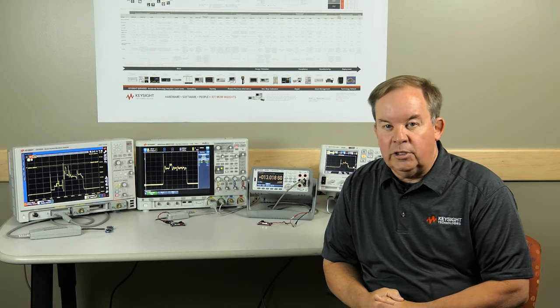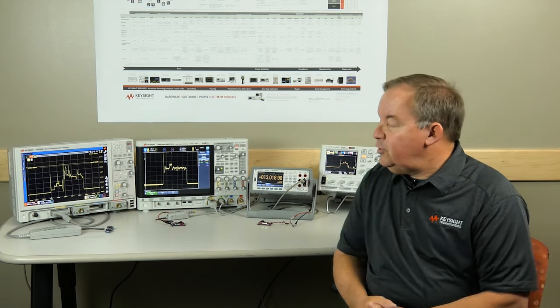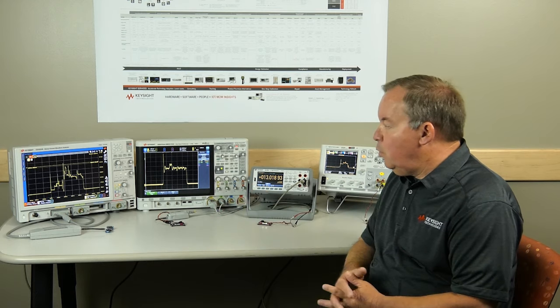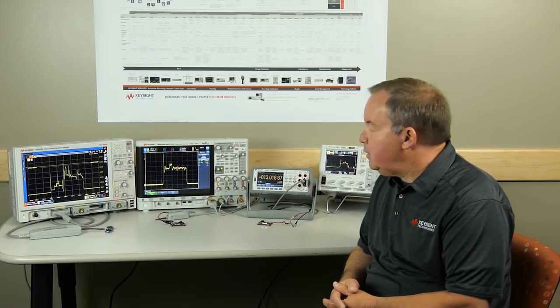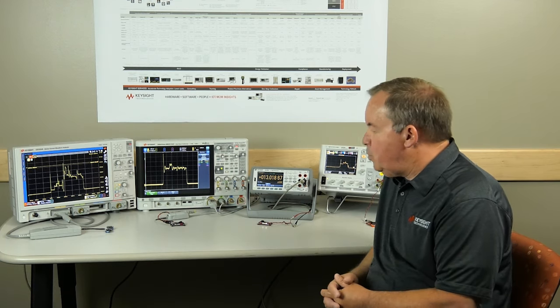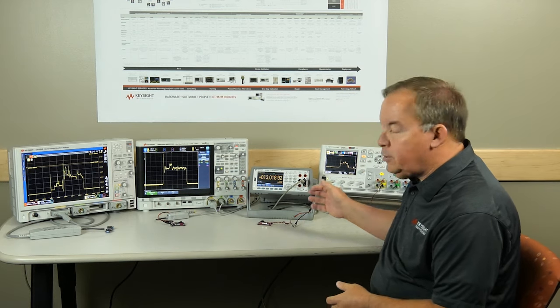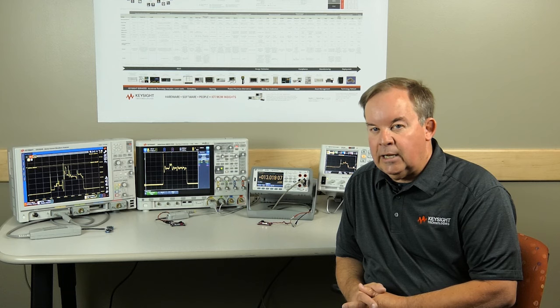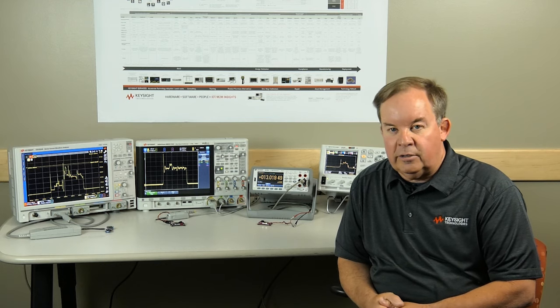Keysight offers a number of solutions available to attack this problem in different ways. As you can see behind me, we have a device current waveform analyzer with a typical pattern from a wearable device as a device under test. We also have an oscilloscope, which may already be on your bench, using a current probe to measure those waveforms and quantify the problem. We have a traditional DMM, and finally a DC power analyzer, purpose-made for this job.